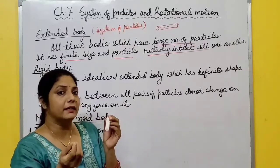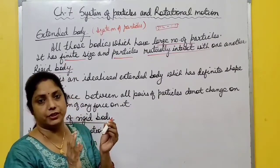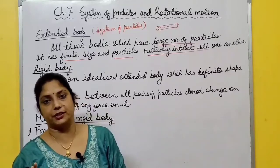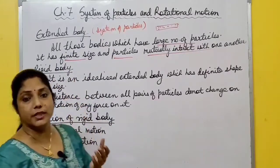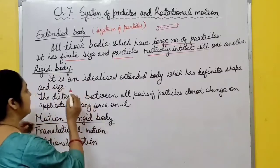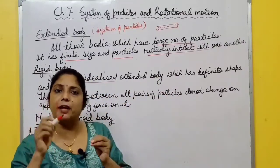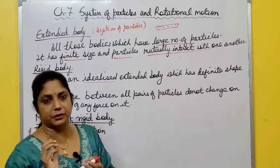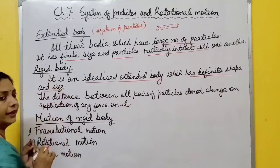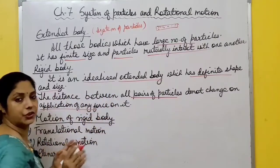In some cases - like this marker, a mobile, or a book - if you apply force, no deformation takes place. So in some extended bodies deformation takes place and in some it does not. A rigid body is an extended body in which no deformation takes place - it has definite shape and size. But it is idealized, meaning just an assumption, because anything you apply force on undergoes some deformation.